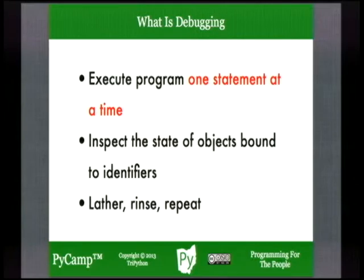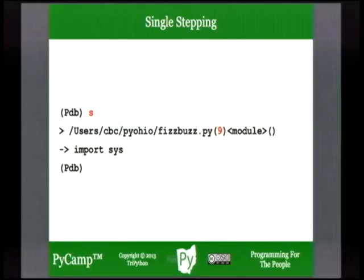To continue about what debugging is — that's executing a program one statement at a time. Execute a statement, inspect the state of your program, the objects bound to identifiers, where your instruction pointer is, keep repeating that process until you zero in on where the problem is. It's a process of elimination. The way to step through a Python program one statement at a time is the 's' debugger command.